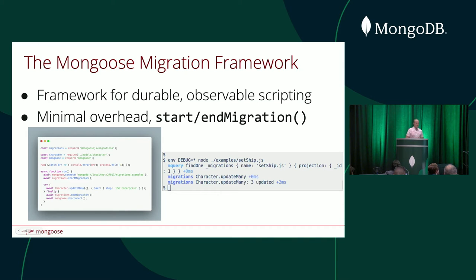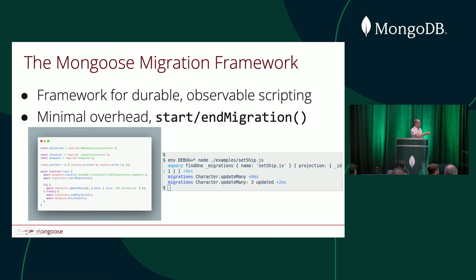Quick overview of the Mongoose migration framework. The goal of the migration framework is to be a framework for durable, observable scripting with Node.js and MongoDB using Mongoose. It's meant to have minimal overhead and give you maximum benefit in terms of tracking what changes and giving you certain other features. In the most basic case, if you're already writing migrations with Mongoose, it looks pretty similar: you import Mongoose, connect to Mongoose, and update a bunch of documents. In this case, I'm importing a character model which maps one-to-one to a collection, and setting every character's ship to USS Enterprise, because I love Star Trek.